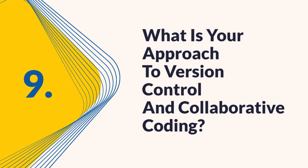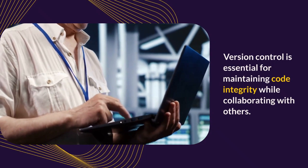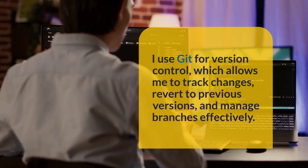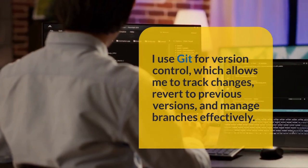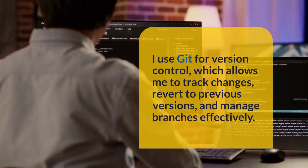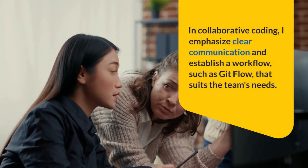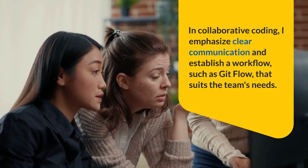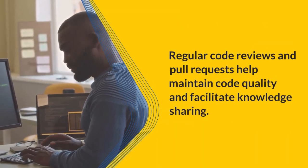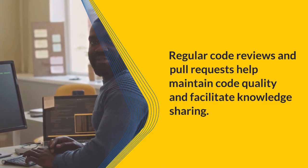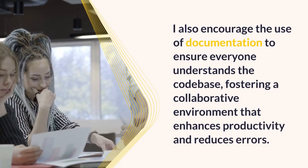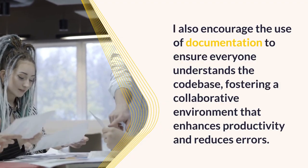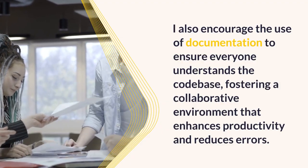Question 9: What is your approach to version control and collaborative coding? Version control is essential for maintaining code integrity. I use Git for version control, which allows me to track changes, revert to previous versions, and manage branches effectively. In collaborative coding, I emphasize clear communication and establish a workflow such as Git flow that suits the team's needs. Regular code reviews and pull requests help maintain code quality and facilitate knowledge sharing. I also encourage documentation to ensure everyone understands the codebase, fostering a collaborative environment that enhances productivity and reduces errors.